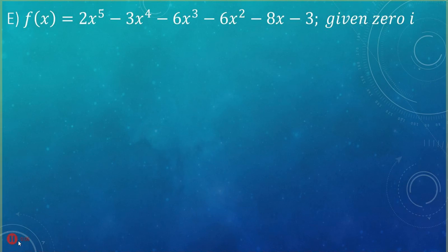This is our last example for 4.3 and this one is a fifth degree, which means that we're looking for five roots. Because it's a fifth degree, we know that it has to have a minimum of one real root. They did tell us two of the five, so I'm going to go ahead and list out my five x's because I'm looking for five.